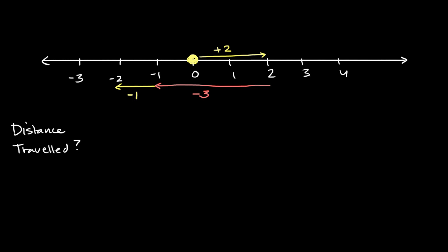Well remember, distance traveled is the entire path length or the entire length of the dot's journey. So this is going to be equal to two to the right, so plus two, and then three to the left. Now this is an important notion. When we talk about distances, we wouldn't say positive or negative. We just care about the absolute value of the amount that we are traveling.